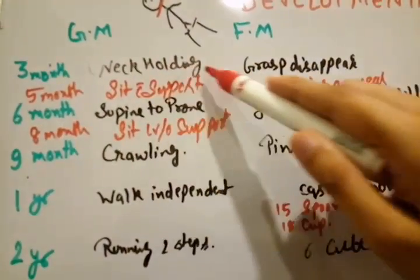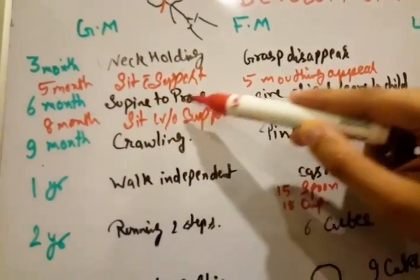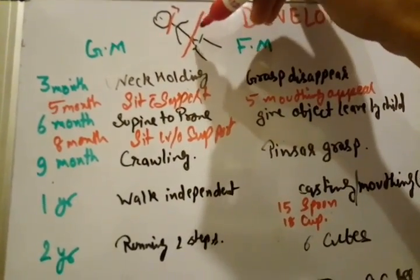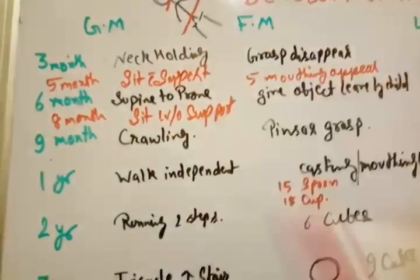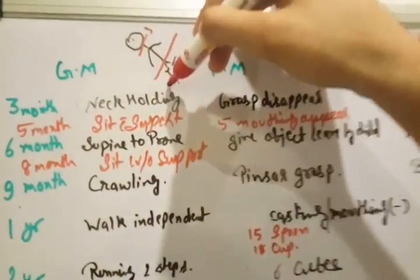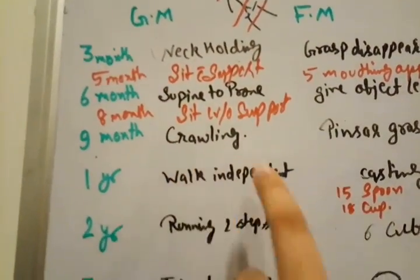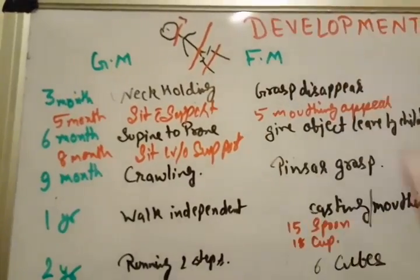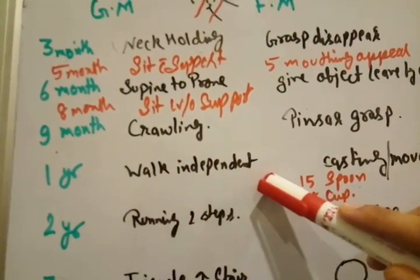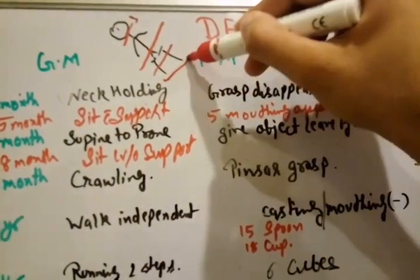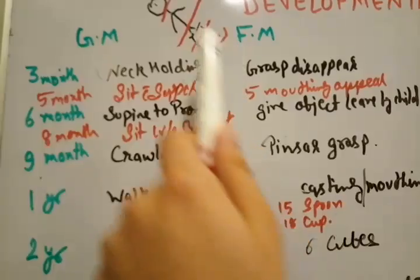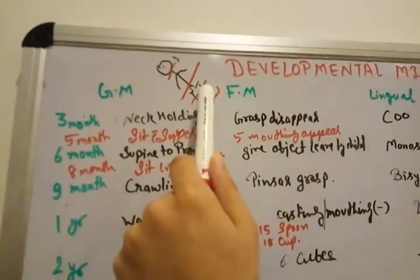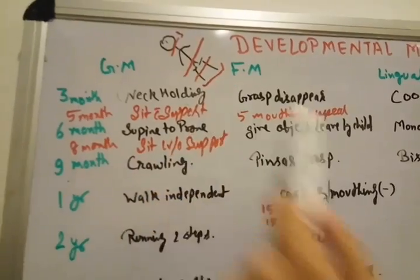At 3 months of age, neck holding. At 6 months with supine to prone movement. Then the knees - 9 month crawling, crawling means baby walking like a bear with the help of both hands and the knee joint. And at 1 year of age, he walks independently on the lower side of foot.